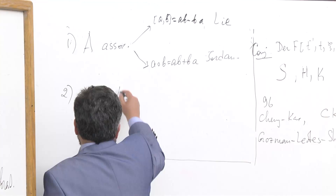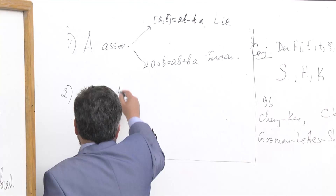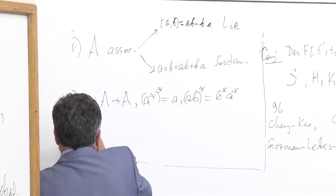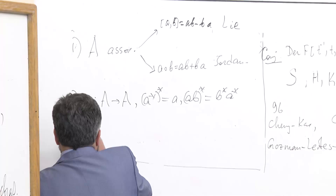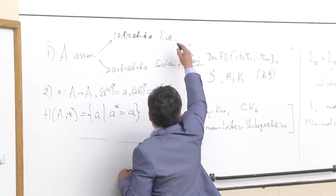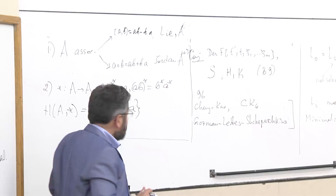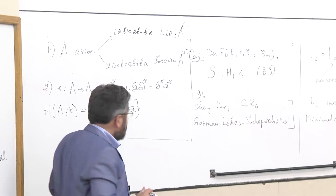Another example: suppose that * is an involution — an antiautomorphism of order two, like transposition of matrices. If we consider the Hermitian (symmetric) elements, this is a subalgebra. This algebra is called A-plus; the corresponding Lie algebra would be A-minus. This is a Jordan algebra, a subalgebra of A-plus.